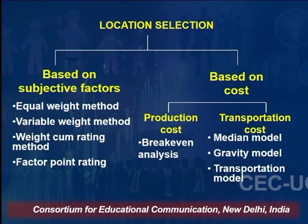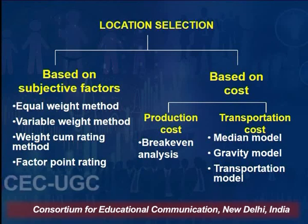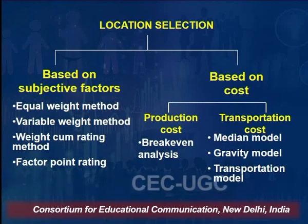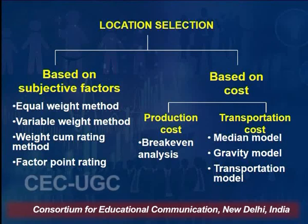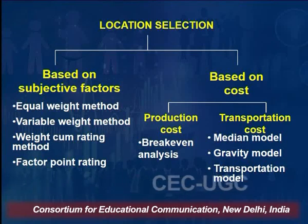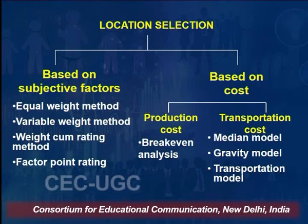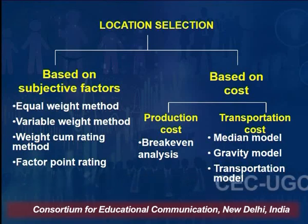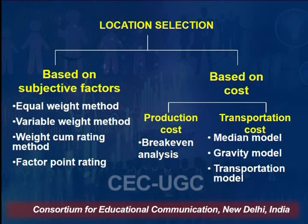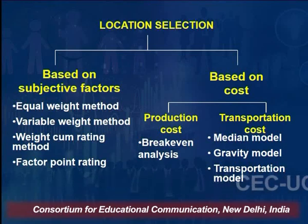Now let us see location selection based on some scientific methods. Location selection is based on subjective factors. There are various methods: the equal weight method, variable weight method, weight cum rating method, and factor point rating method. Then based on cost, there is a production cost method which is breakeven analysis, and there are transportation cost methods — the median model, gravity model, and transportation model. In today's lecture, we will try to cover some of these methods.